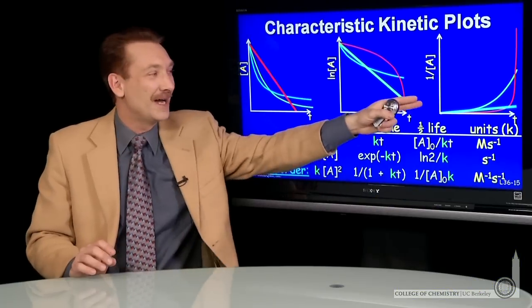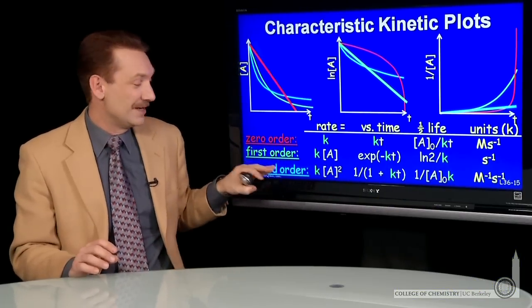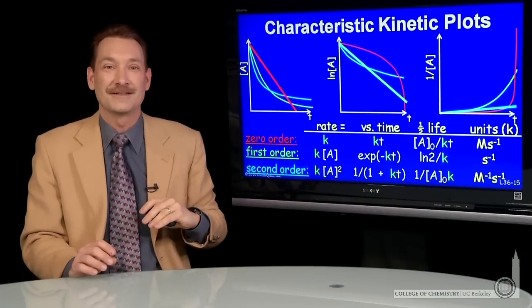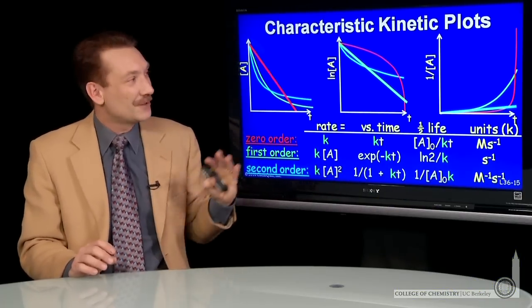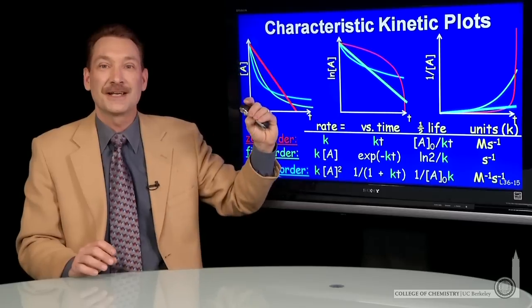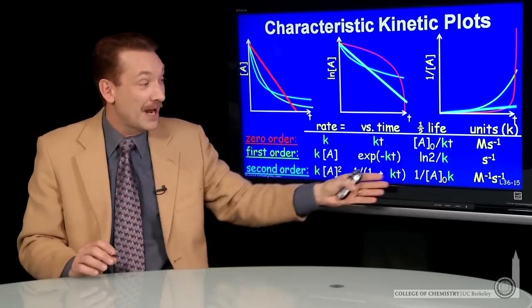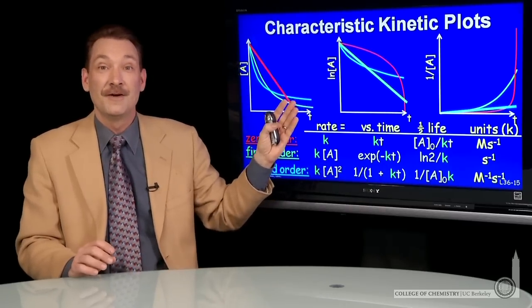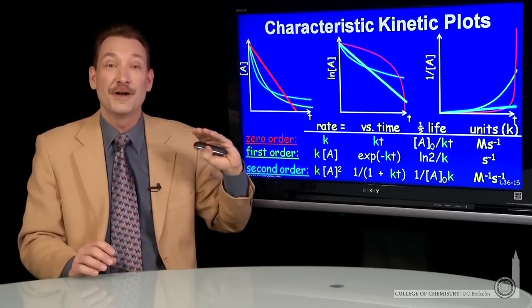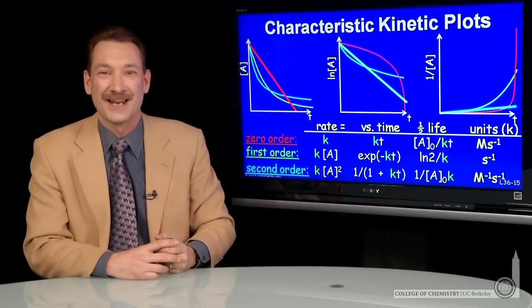So when you find the linear plot, you determine the kinetics. That's a summary of our characteristic kinetic plots and the parameters for zero order, first order, and second order kinetics.